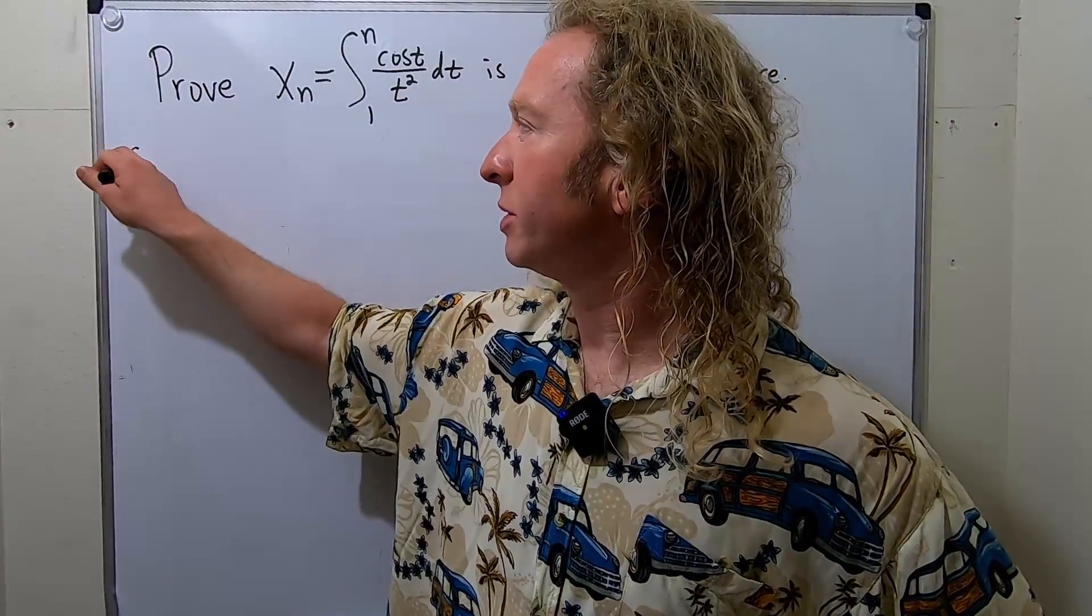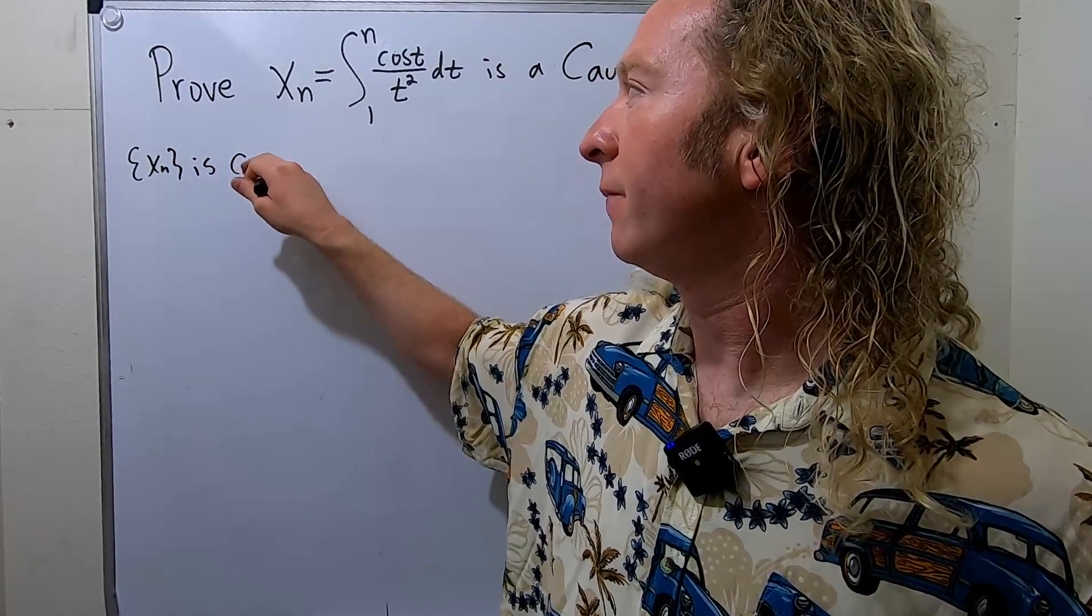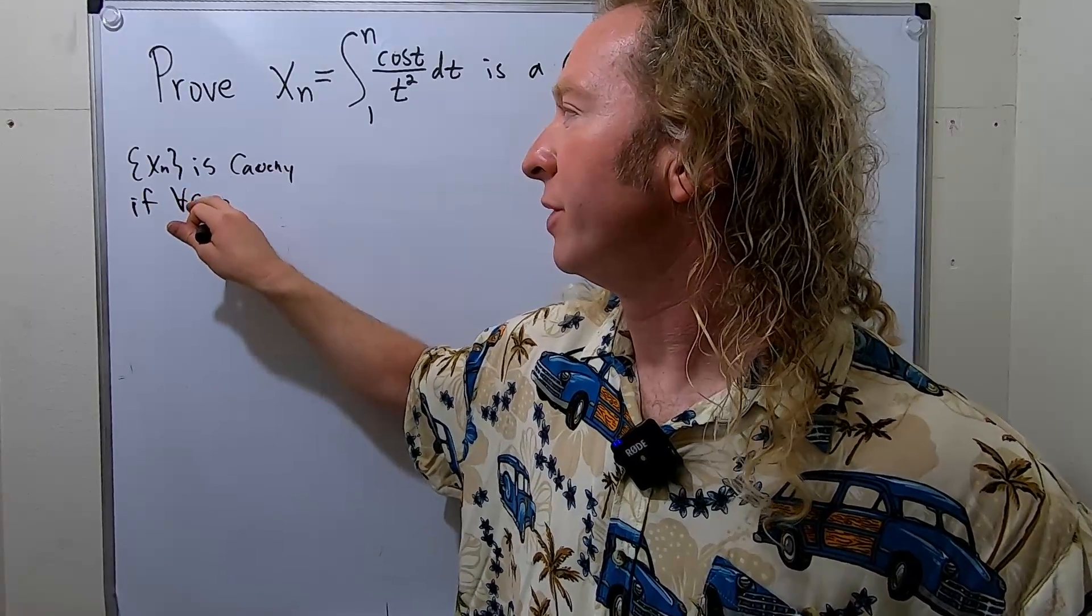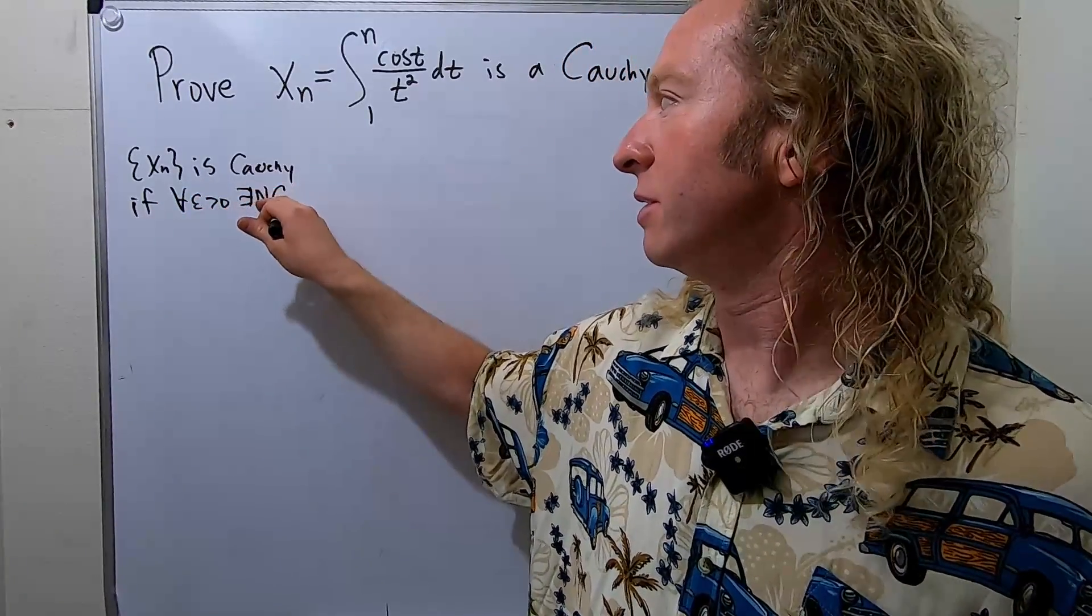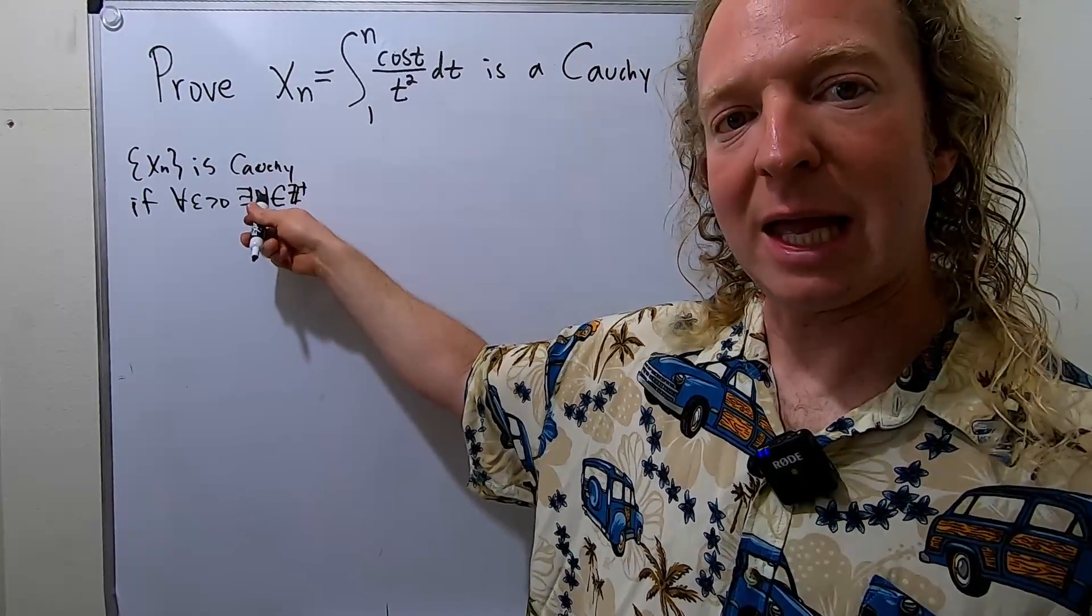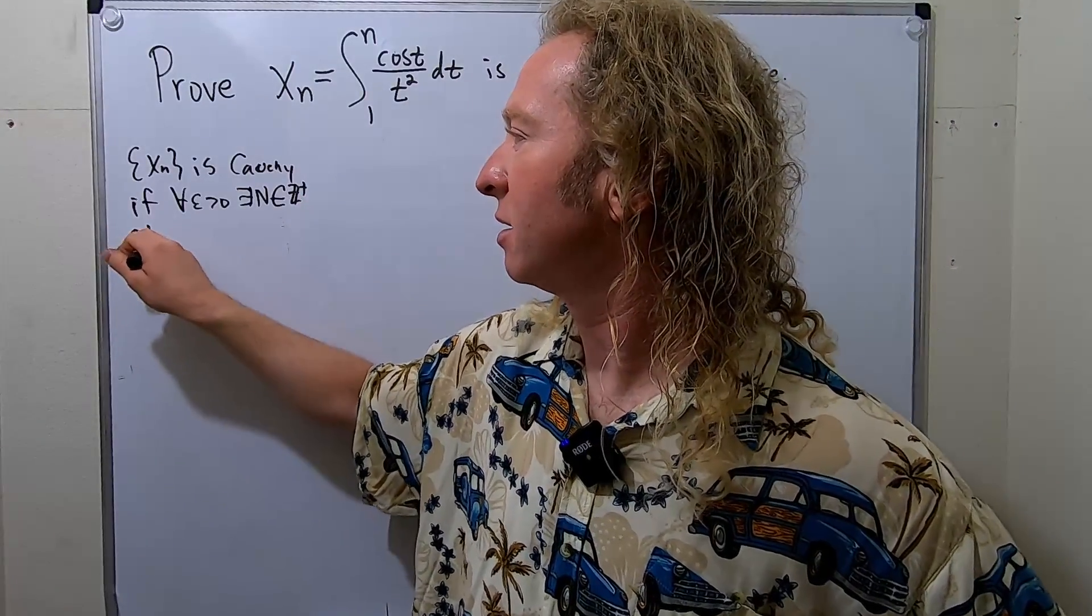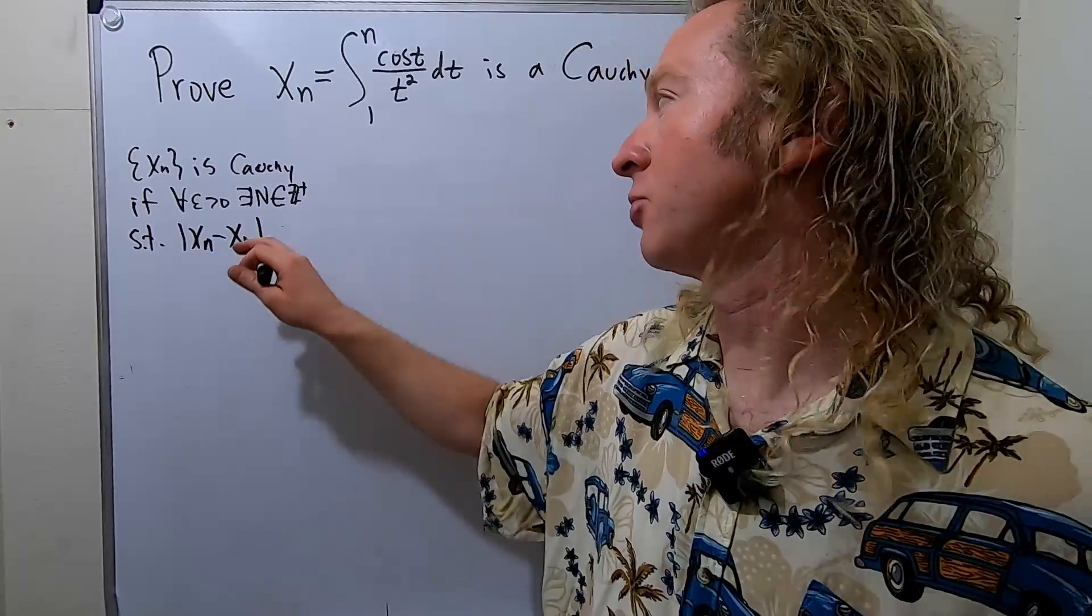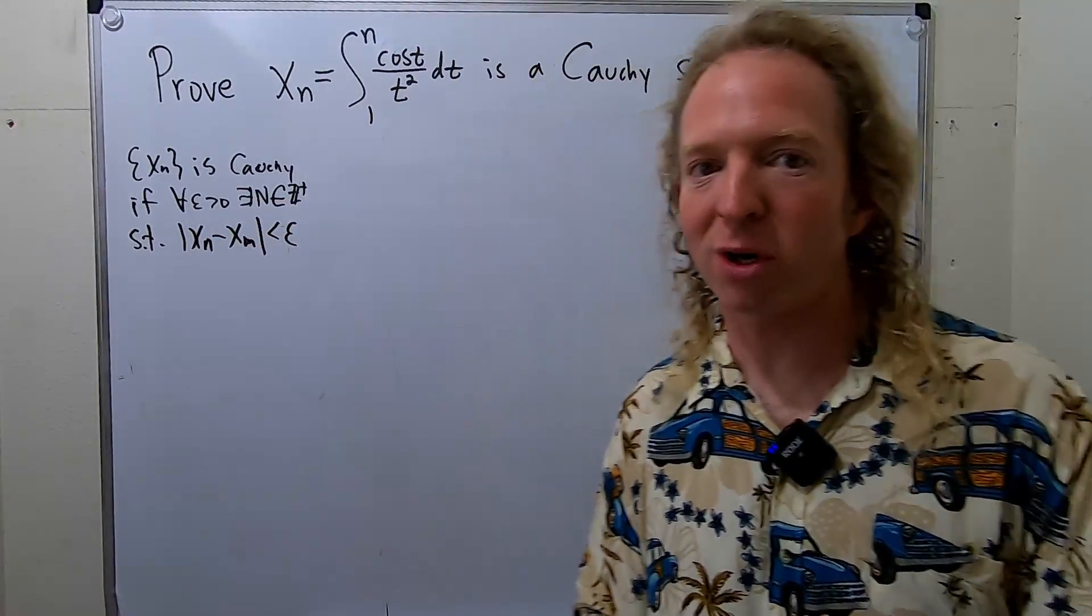So we say a sequence x_n is Cauchy if for every epsilon greater than zero, we can find a positive integer n, there exists an n in the set of positive integers, such that the distance between x_n and x_m can be made small. How small? Well, less than epsilon for all epsilon. In other words, it can be made arbitrarily small.